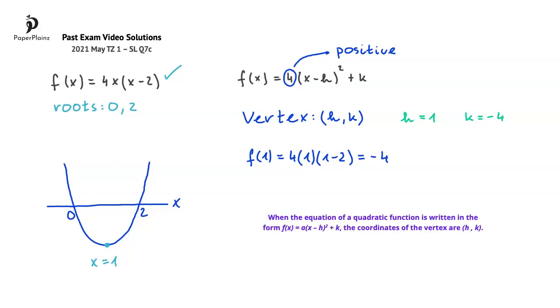Keep in mind that when the equation of a quadratic function is written in the form fx equals a times x minus h squared plus k, which we also call the vertex form, the coordinates of the vertex are h and k. Remembering this can give you a shortcut to the solution.